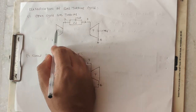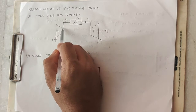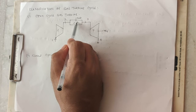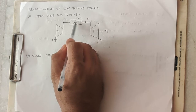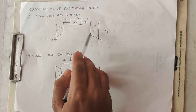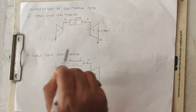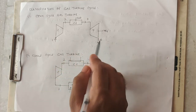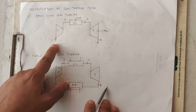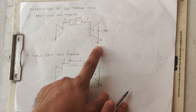In the open cycle, we take air from the atmosphere and compress it to a high temperature and high pressure. It then flows into the combustion chamber where fuel is injected and ignites due to the high temperature of the air. After that, we extract work in the gas turbine, and the exhaust gases are discharged to the atmosphere. Because we take a fresh charge from the atmosphere and discharge exhaust gases back to the atmosphere, this cycle is called an open cycle.